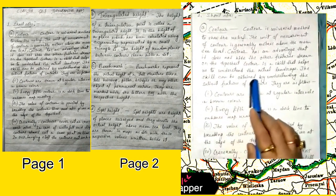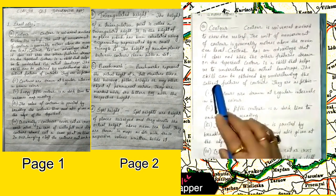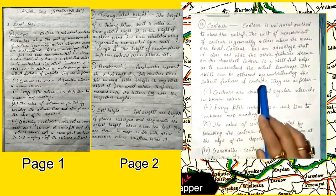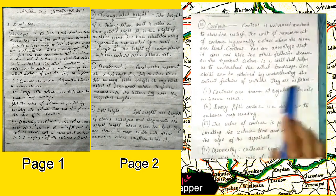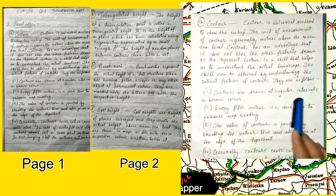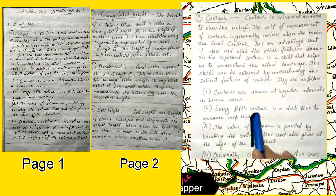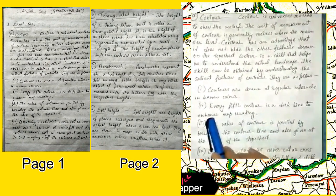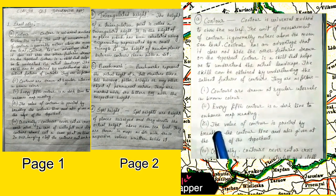They are as follows: Number 1, contours are drawn at regular intervals in brown color. Every fifth contour is a dark line to enhance map reading.